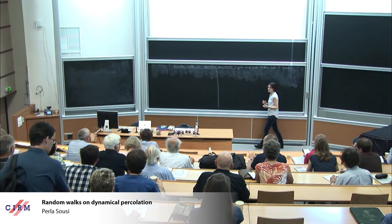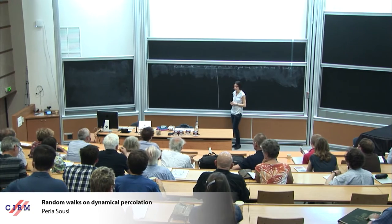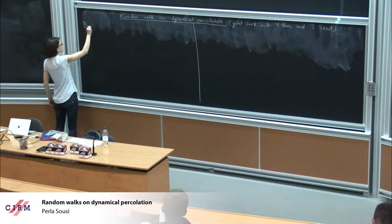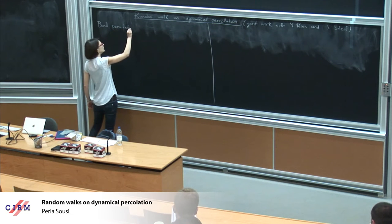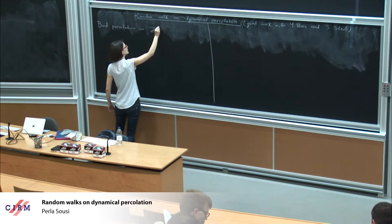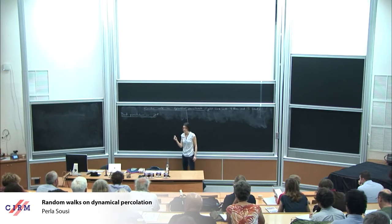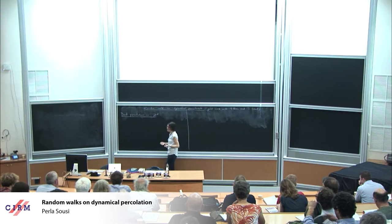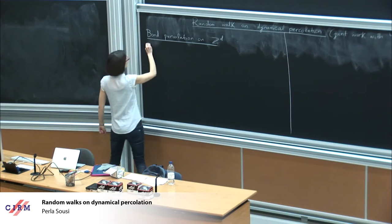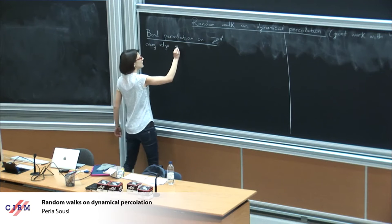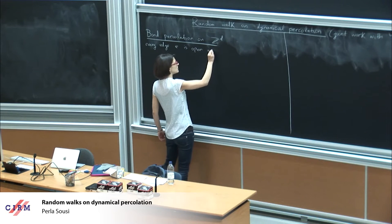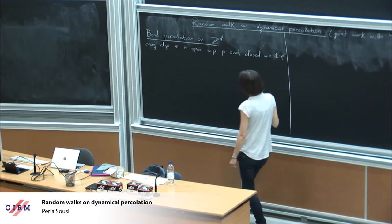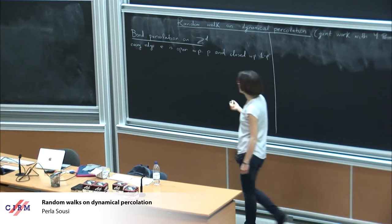Before I define the model, I will introduce some models that probably most of you already know, but I just want to fix notation. Let me first start by describing what I mean by bond percolation on Z^d. Bond percolation means that I keep every edge of the integer lattice with probability p, and with probability 1 minus p I don't keep it. If I keep an edge I call it open, and if I don't keep it I call it closed. So every edge e is open with probability p and closed with probability 1 minus p, and we do this independently for different edges of the lattice.